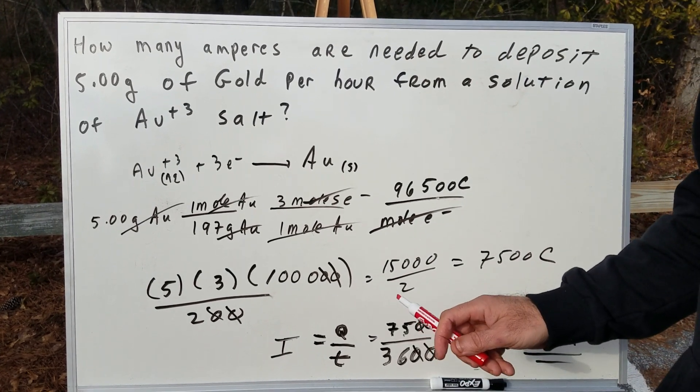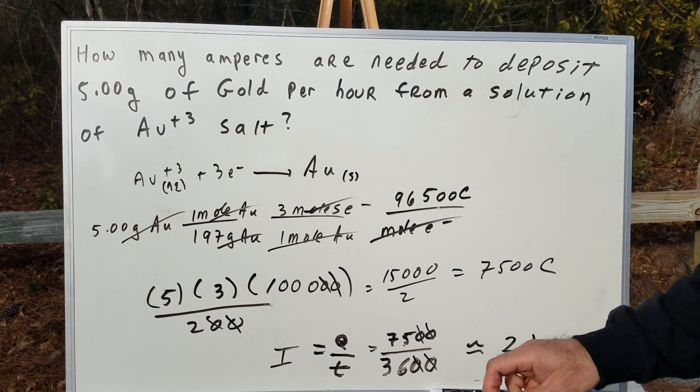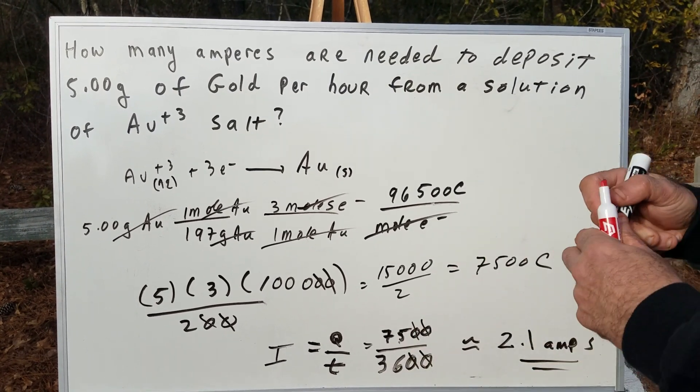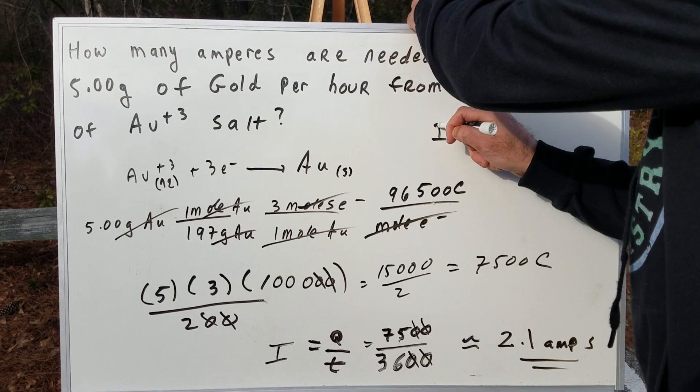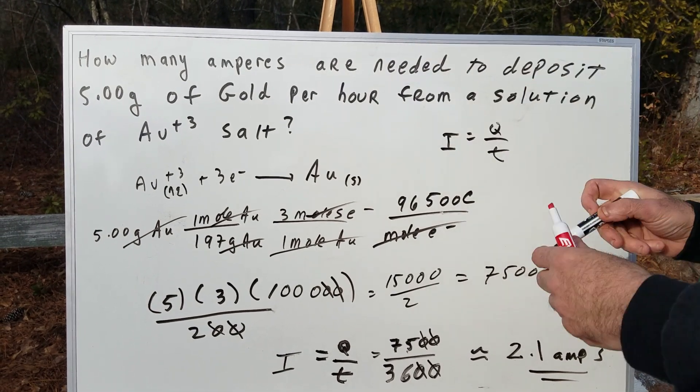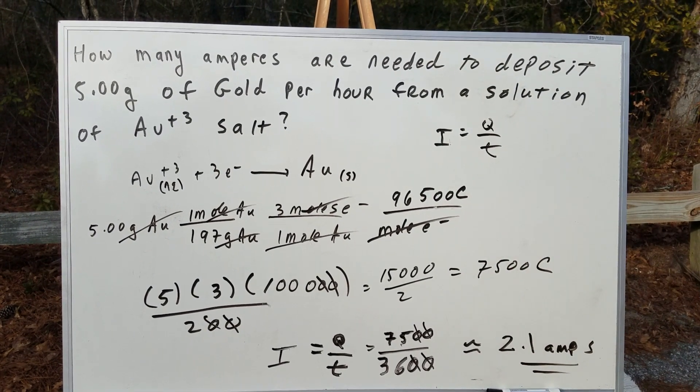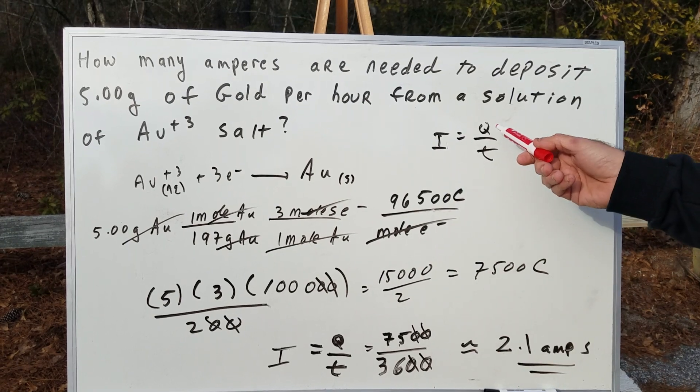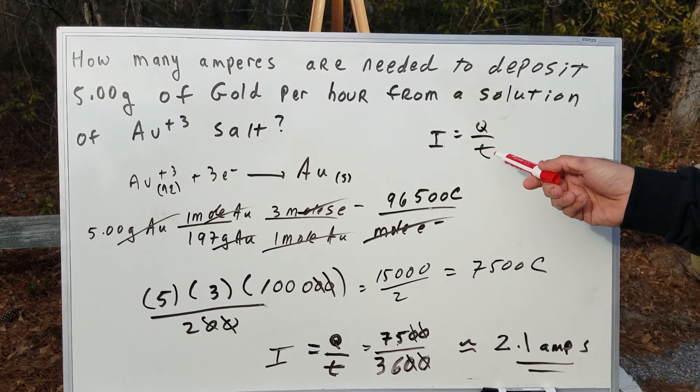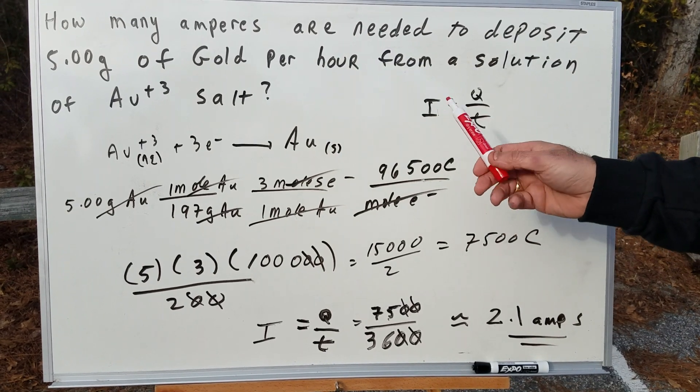The first thing to remember when you're doing these problems is the formula we're going to be using: current equals Q divided by T. I stands for the current, and that's what we want. Q is the charge and T is the time. Per hour, one hour is 3,600 seconds.